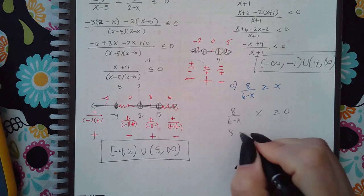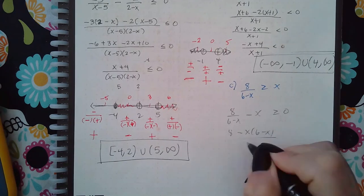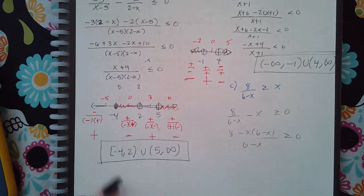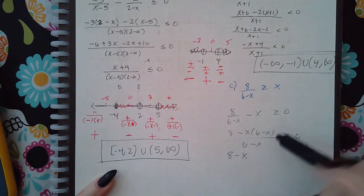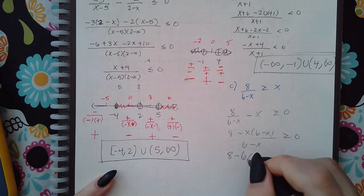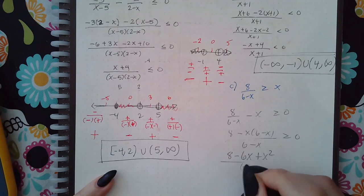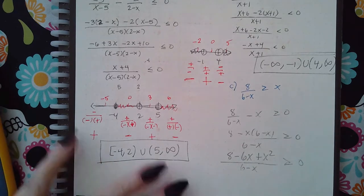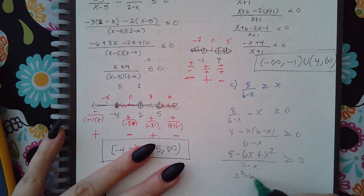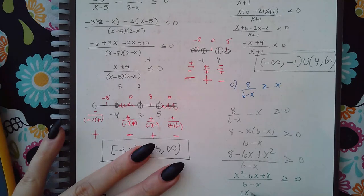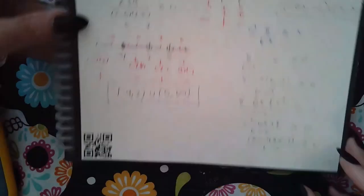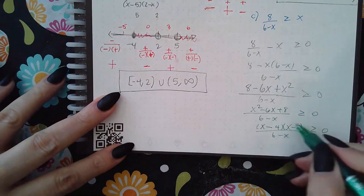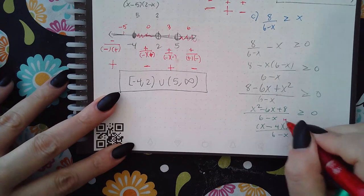For the last one we move over the x, then we get a common denominator. I'm going to distribute that, minus x, and then I'll rearrange that before I try to factor it. So I get x minus 4 times x minus 2. When I set each one equal to 0 I'm going to get 4, 2, and 6.